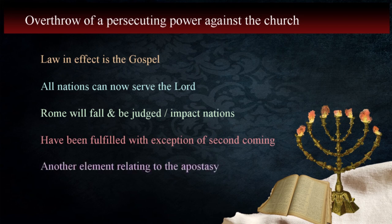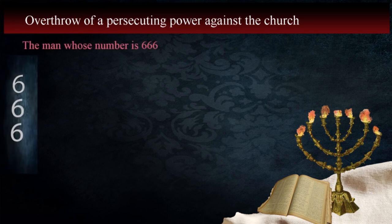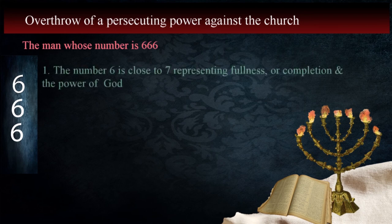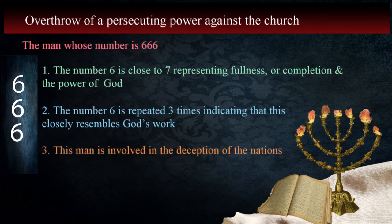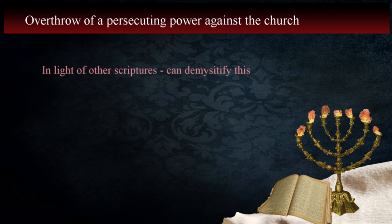But there's another, more subtle element related to the apostasy. In the book, we find that there's a man whose number is 666 who rises to power. I've talked about this in my lesson on the numbers of God, but I'll summarize the main points here. The number six is close to seven, representing fullness or completion and the power of God. The number six is repeated three times, indicating that this closely resembles God's work. This man is involved in the deception of the nations. If we analyze this in light of what we've learned about the scriptures, we can demystify the meaning in a way that is valid and compatible with what other passages teach.